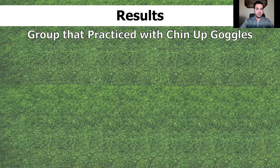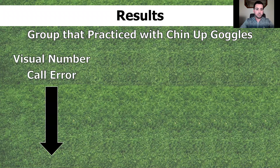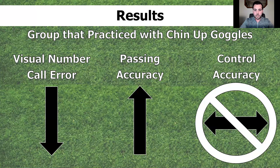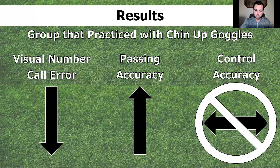What we found for the group that practiced with the chin-up goggles is that they significantly reduced their number call error — meaning they were able to identify far more of the numbers displayed on screen. We also found that their passing accuracy significantly improved, and there was no change in their control accuracy. Importantly, none of these changes were experienced by the practice group or the control group across the post-test or retention test.